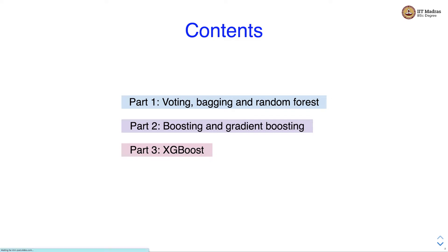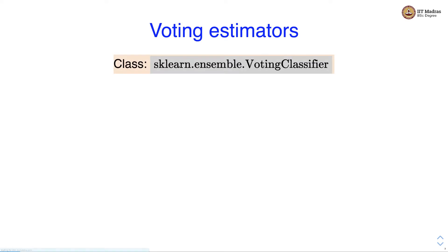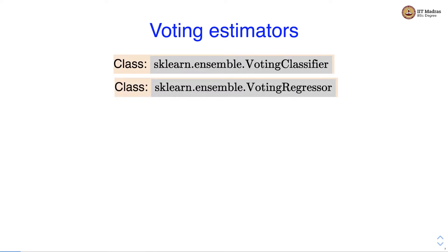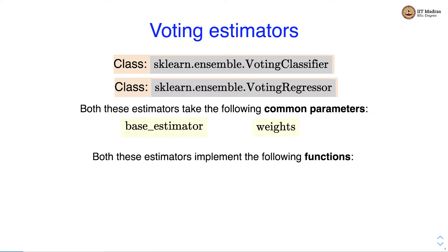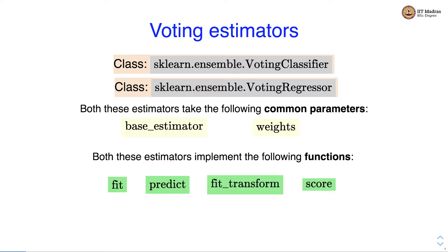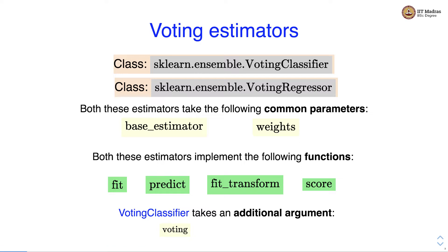Let's first discuss voting estimators. There are two voting estimators: voting classifier and voting regressor. They are implemented as part of the sklearn.ensemble module. Both estimators take the following common parameters: base estimator and weights, and implement the following functions: fit, predict, fit_transform, and score. Fit is used to train the estimators, predict is used to obtain predictions for new samples, fit_transform performs transformation as well as fitting, and score obtains the performance of the estimator.